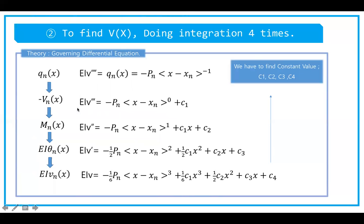The next integral gives us the shear force with constant C1. Another integration gives us the moment equation with C2. The next integral gives us the angle with C3. Finally, we get to the deflection, which is the fourth integration, giving us a fourth constant C4.